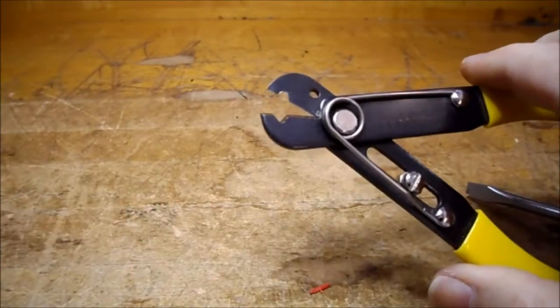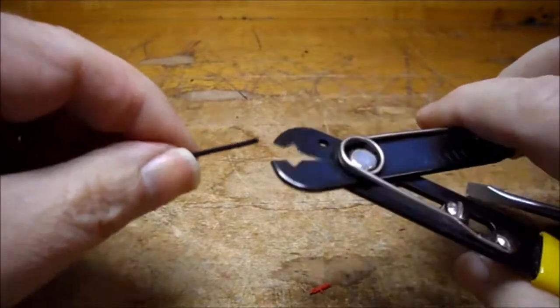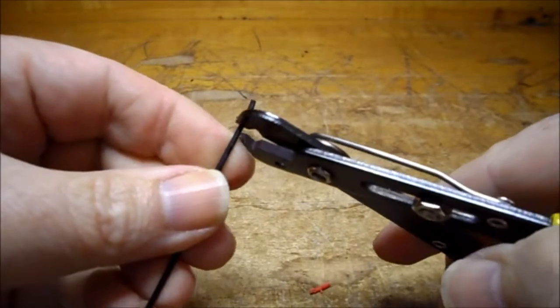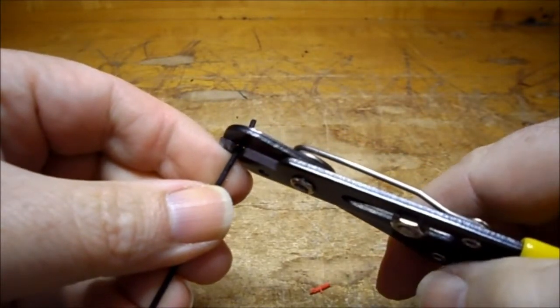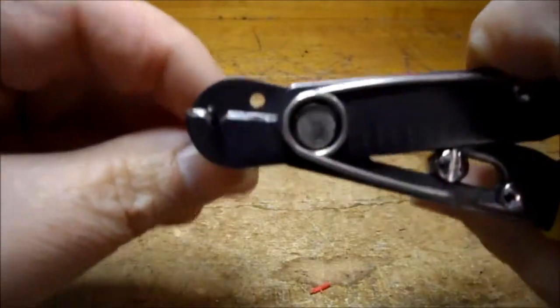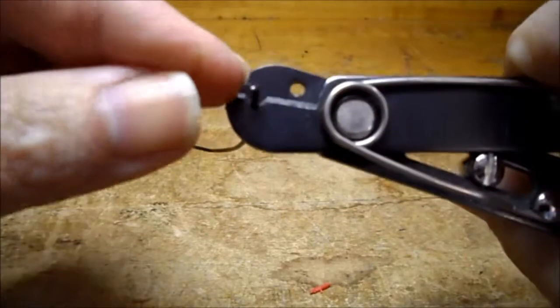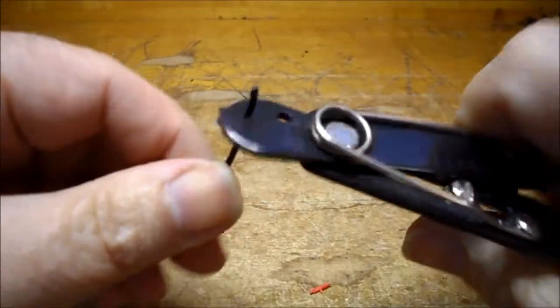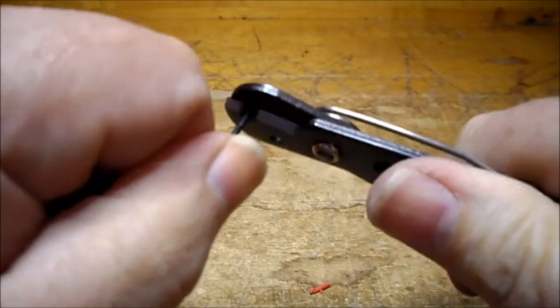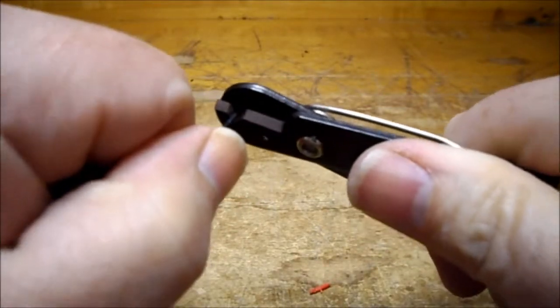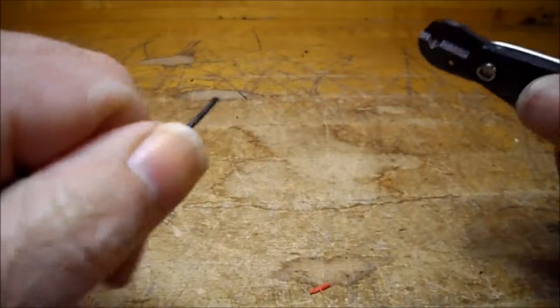So now when you take a piece of wire with the insulation on it, you should be able to bring it in and close. Notice how it holds the wire because it's actually dug into the insulation. Then just hold onto your piece of wire firmly and push away with your wire stripper. You can see that makes a nice clean cut on your insulation and it doesn't nick the wire.